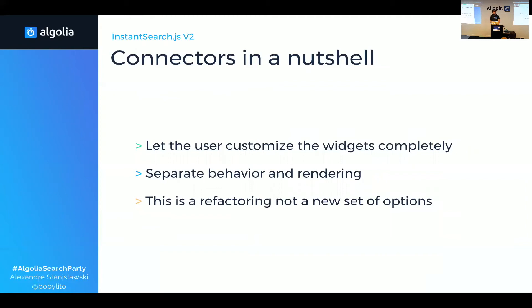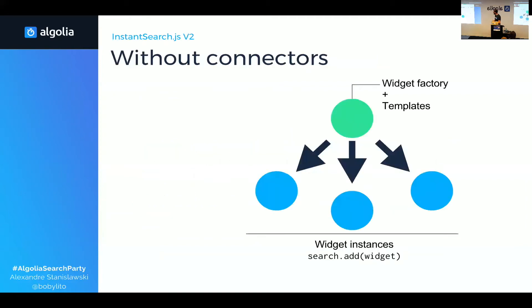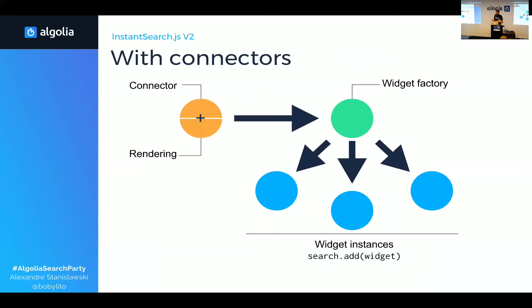Let's see how it works. Without the connectors, you have the widgets with a set of options, and with those options you create new instances and attach them to InstantSearch. The problem is that the rendering is built into the widget, so you can't remove it — you can use options but it has its limits. With the new connector API, you provide a new rendering and it creates a new widget factory, which can then be used to create instances.